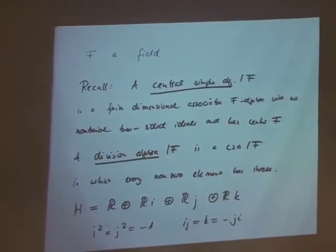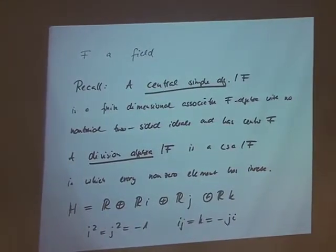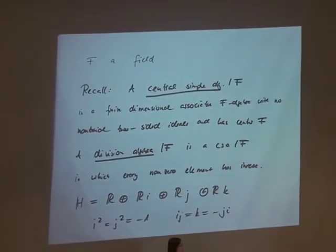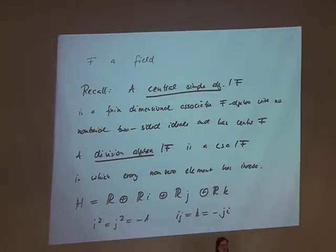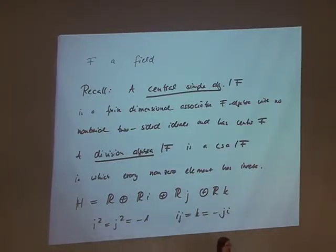Obviously every field is a division algebra, but those aren't so interesting. As it happens often in mathematics, someone later found that Hamilton wasn't actually the first to find the quaternions — Gauss had already found them in 1819, but this was only discovered in his written papers and published after his death in 1900.